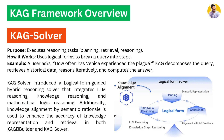The CAG Solver executes reasoning tasks. It has planning, retrieval, and reasoning components, and uses logical forms to break every query into steps. For example, if you ask how often has Venice experienced the plague, CAG decomposes the query into multiple steps: first retrieving historical data, then performing reasoning, then generating the answer. The CAG Solver uses a logical form guided hybrid reasoning system to give you a complete, correct answer.